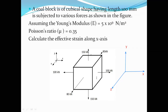Looking at the diagram, the force acting along the x-direction is 100 kN — tensile in nature since arrows point outward. The force along the y-direction is 150 kN, also tensile. The force along the z-axis is 80 kN. We are asked to find the effective strain along the x-axis, i.e., epsilon_x.